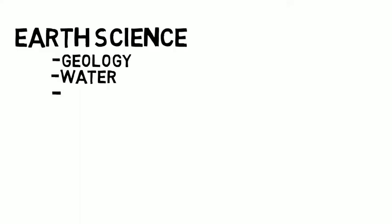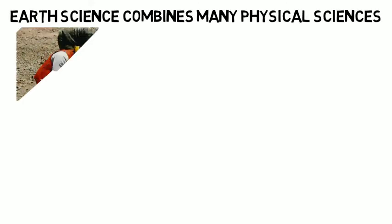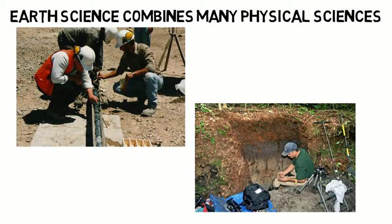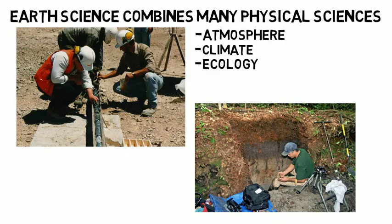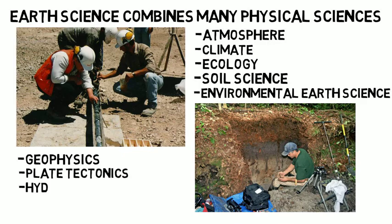Earth Science has more of a focus on geology, water, and soil, whereas Environmental Science does cover those aspects as well, but is more centered around ecology, biology, and the environment. Earth Science combines many fields into a unified physical science and covers topics such as the atmosphere, climate, ecology, soil science, environmental earth sciences, some aspects of geology, geophysics, plate tectonics, and hydrology.